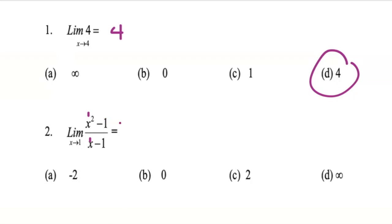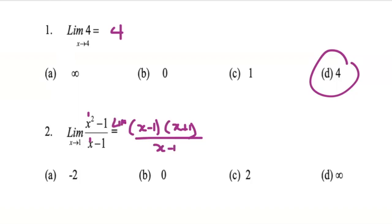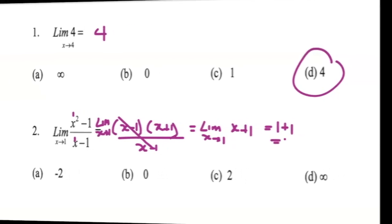So we factorize the numerator: x squared minus 1, the difference of two squares, is x minus 1 times x plus 1, over x minus 1. We need to write our limit symbol — limit as x tends to 1. The whole point of factorizing is so that we can cancel. We cancel x minus 1, giving us the limit as x tends to 1 of x plus 1. Replacing x with 1: 1 plus 1 gives 2.